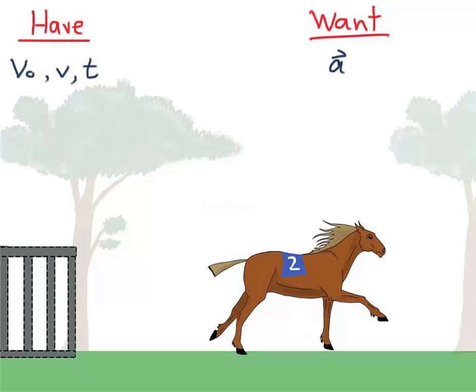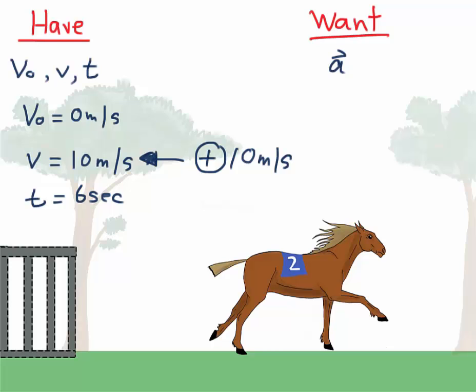We have the initial velocity, the final velocity and the time t. And we are looking for the acceleration. The initial speed is 0, the final velocity is 10 meters per second and the time is 6 seconds. We define to the right as positive so the final velocity is positive.